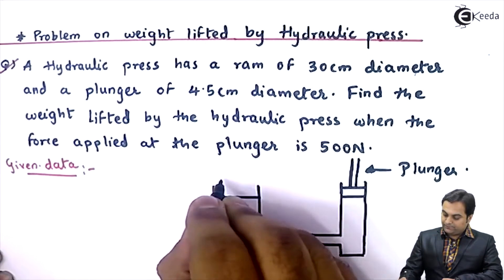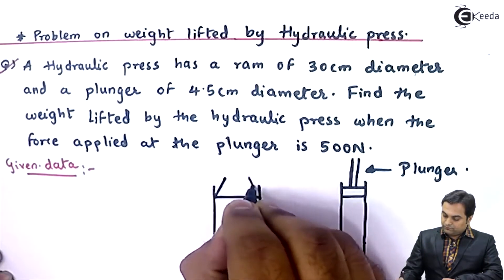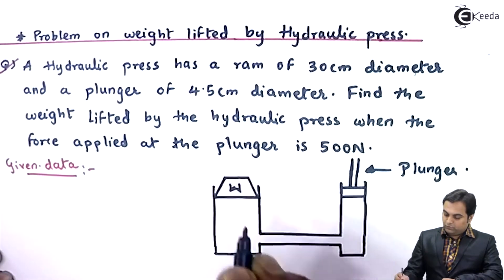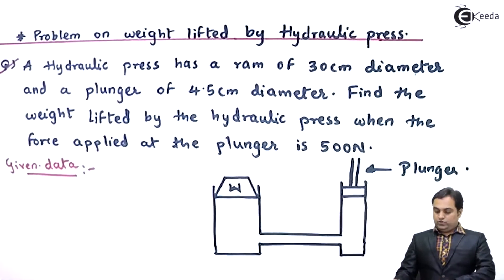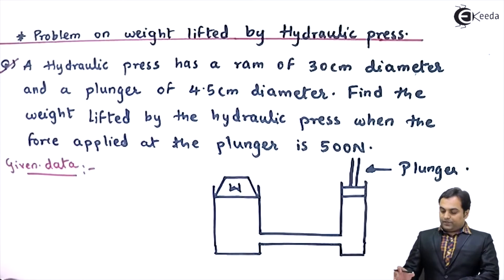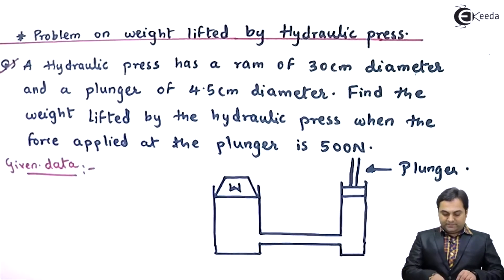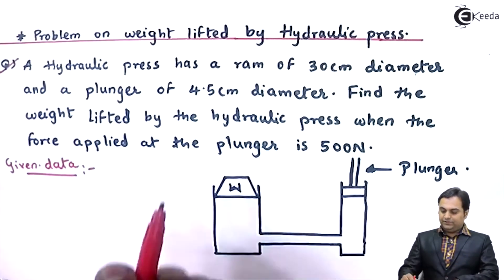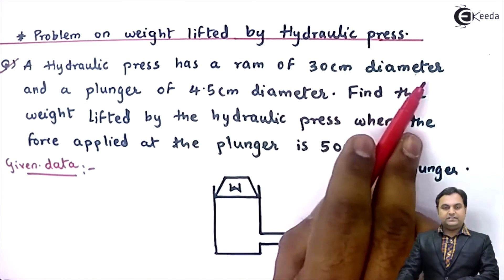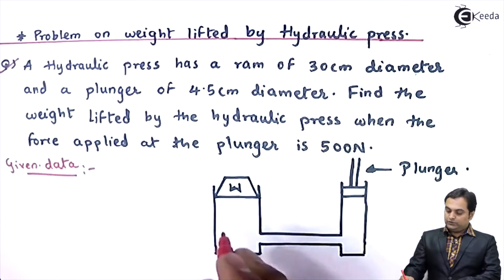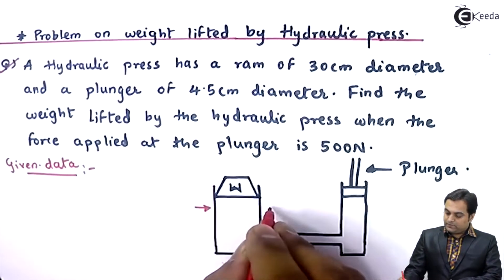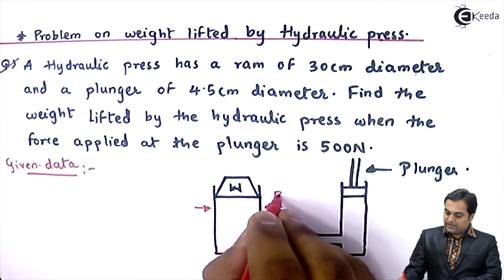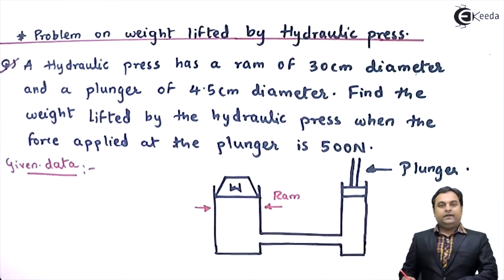which is to be lifted. Load I'll denote it by W. Now in this hydraulic press, here it is mentioned it has a RAM of 30 centimeter diameter. So this portion, this is called as the RAM.